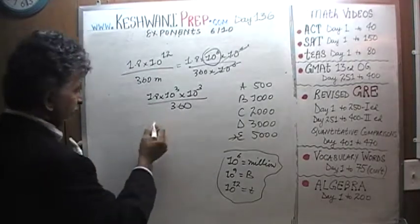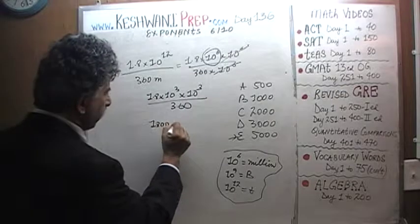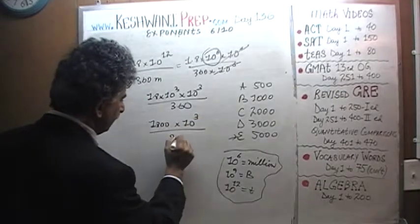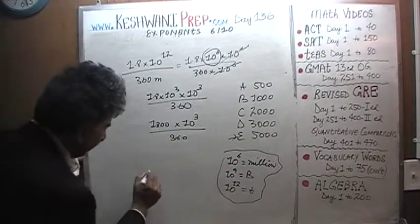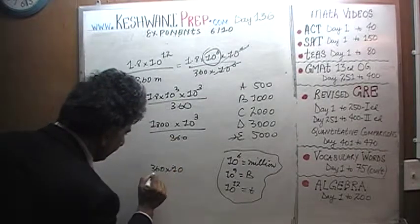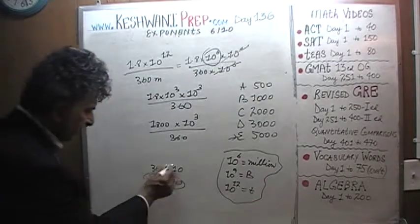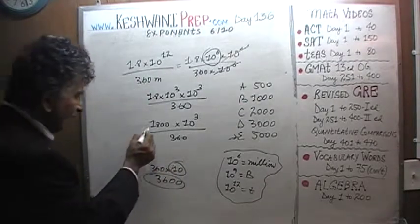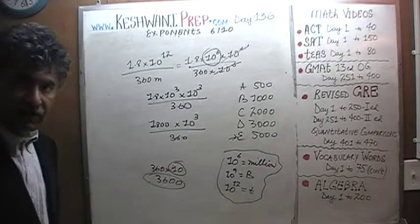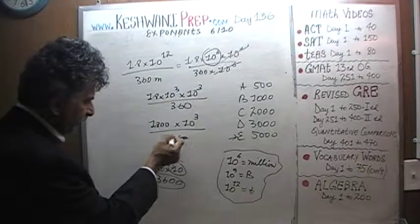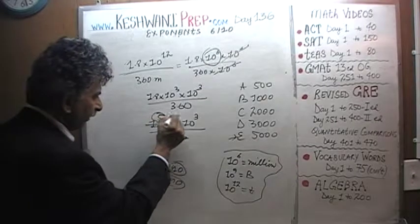1.8 times 1000 is 1800 times 10 raised to 3 over 360. Well, 360 times 10 is 3600. If 3600 is 10 times the amount, 1800, which is half of 36, got to be 5 times the amount. So 360 divided, 1.8 times 10 divided by 360 is 5. So 5 times 1000.